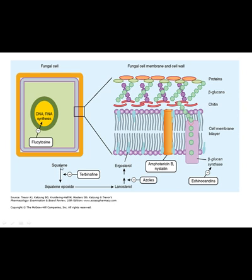The synthesis of ergosterol starts from squalene. Squalene is first converted into squalene epoxide, then squalene epoxide is converted into lanosterol, and lanosterol is converted into ergosterol.